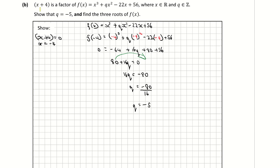The question wanted us to show that q is equal to negative 5, and we just have. Now I'm going to find my other two roots. We already have one root as negative 4. To find the other two, I'm going to divide the factor x plus 4 into the cubic x cubed minus 5x squared minus 22x plus 56 using algebraic long division.